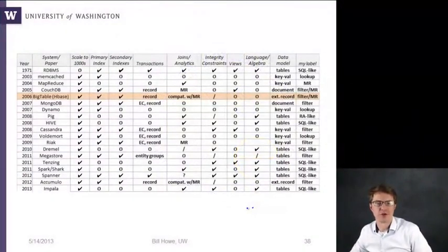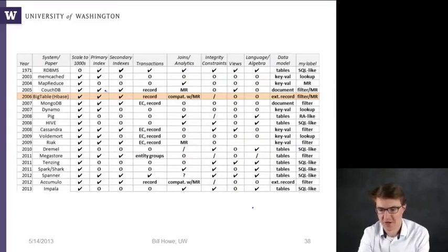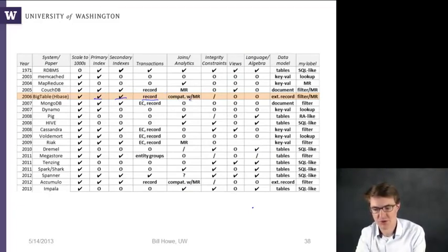Okay, so the third influential system that Rick mentioned in the paper is BigTable from Google, which is a paper from 2006. And so here we're looking at primary index lookup, secondary index lookup. Transactions are also at the sort of scale of an individual record. Joint analytics is not supported by BigTable directly.